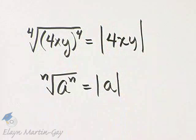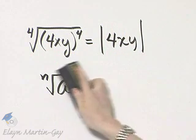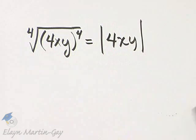By the way, we have not inserted absolute value bars before because we assumed variables took on positive numbers or represented positive numbers only, and we are not assuming that here. So we have the absolute value of 4xy. That is fine,